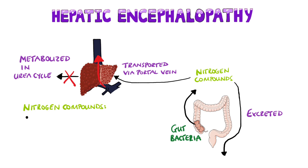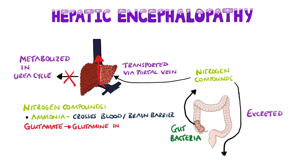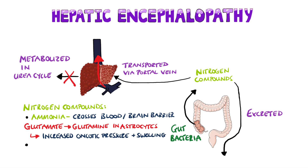The most important of these nitrogenous compounds is ammonia, which is able to cross the blood-brain barrier and is metabolized by astrocytes as they create glutamine from glutamate. The result is that more glutamine production increases the oncotic pressure within the astrocyte, causing it to swell. Other molecules involved in hepatic encephalopathy include mercaptans, short-chain fatty acids, and phenol.